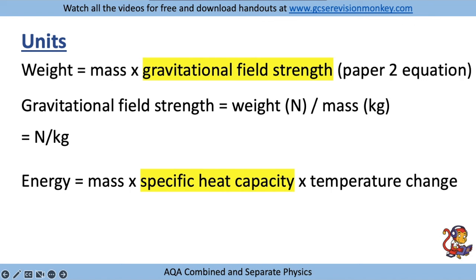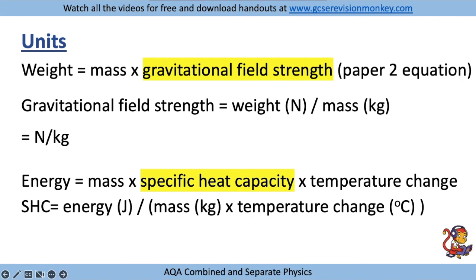Then specific heat capacity - this is a difficult unit to remember, but if you rearrange the equation, specific heat capacity equals energy divided by mass multiplied by temperature change. The units are therefore joules per kilogram degrees C, because that's energy in joules divided by kilograms multiplied by degrees C.